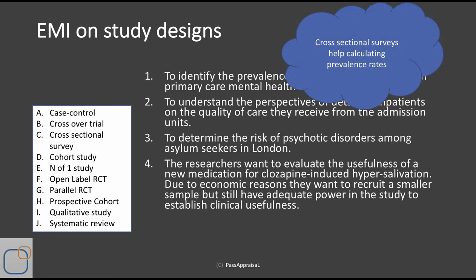It's important to note that cross-sectional surveys help in calculating prevalence rates. Whenever you are interested in the prevalence of any health phenomena of interest, you can use a cross-sectional survey to study how common that phenomena is in a sample of the population, and you can then extrapolate that number to the entire population, provided that the sample is representative. So for question 1, the answer is a cross-sectional survey.